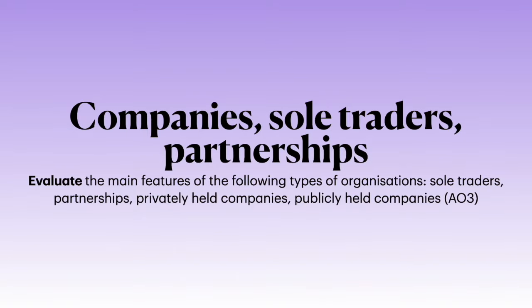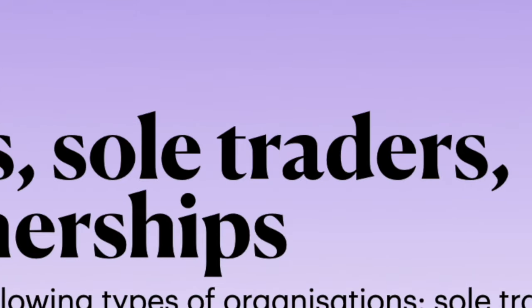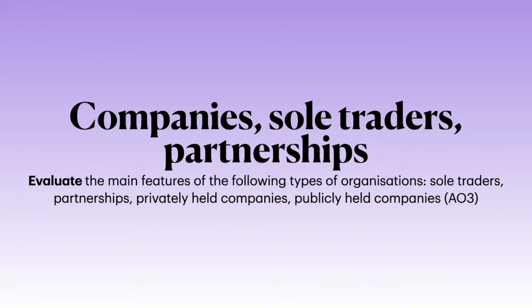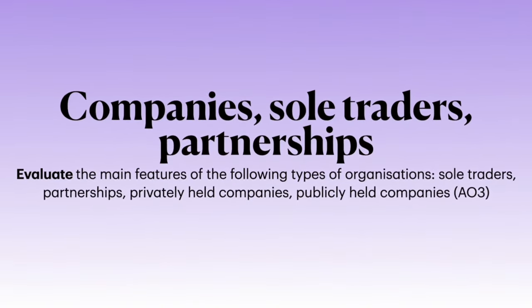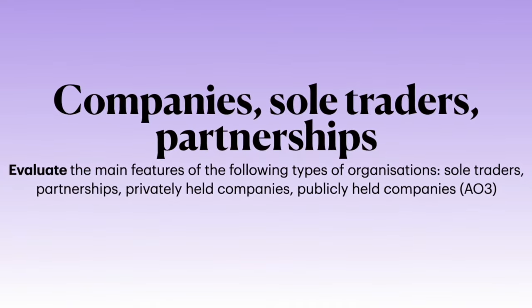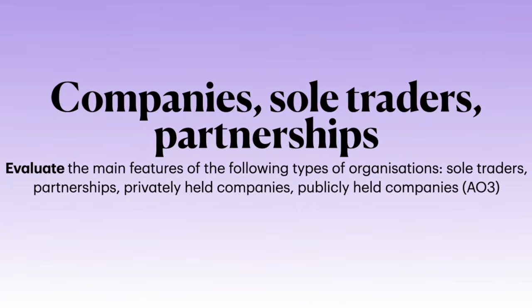The second part of this class is called Companies, Sole Traders, and Partnerships. The objective here is to evaluate the main features of the following types of organizations: Sole Traders, Partnerships, Privately Held Companies, and Publicly Held Companies — AO3. AO3 means evaluation. So we're going to come up with certain criteria or key terms that we will use for evaluation.